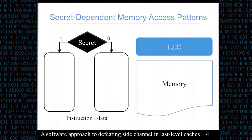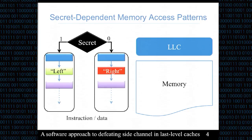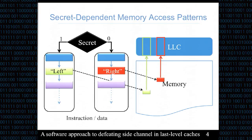Our work focuses on the last-level cache. To show how a secret can be leaked through the cache, we introduce a common vulnerability in algorithms with secret-dependent decisions, leading to left or right branches. Since these branches are different, they use different instruction or data blocks — shown as green and red blocks — which are mapped to different locations in main memory and very likely to different cache sets. If the attacker can determine whether the victim used the left or right cache set, the attacker learns one bit of the secret.